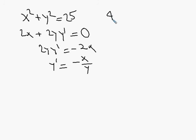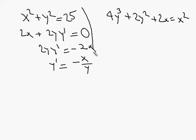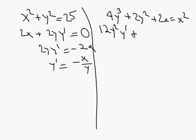Let's do a slightly trickier example: 4y³ + 2y² + 2x = x². The derivative of 4y³ is 12y²·y prime. The derivative of 2y² is 4y·y prime. The derivative of 2x is 2. The derivative of x² is 2x.